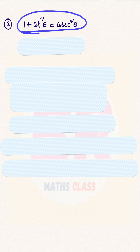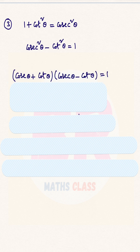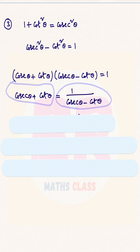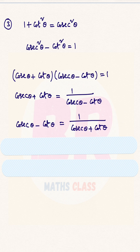The third trigonometric identity is 1 + cot²θ = csc²θ. From this, csc²θ − cot²θ = 1. As it is in the form a² − b², we get (cscθ + cotθ)(cscθ − cotθ) = 1. From this, cscθ + cotθ = 1 / (cscθ − cotθ), and similarly, cscθ − cotθ = 1 / (cscθ + cotθ).